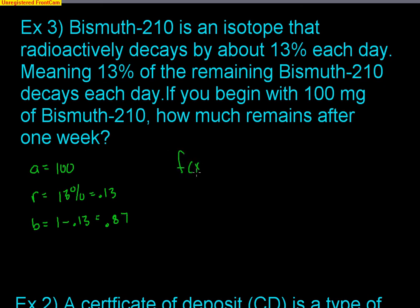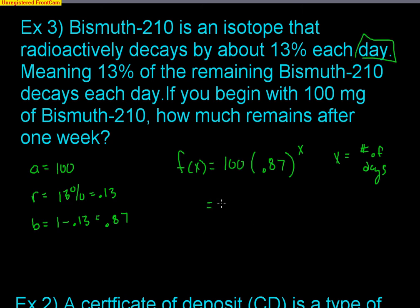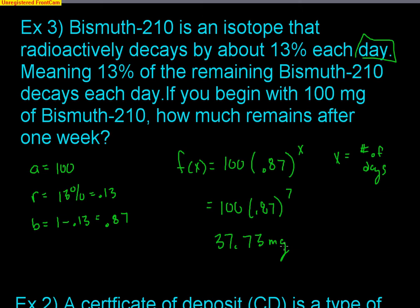My function is 100 times 0.87 raised to X, where X is the number of days. One week is seven days, so: 100 times (0.87) raised to 7 equals 37.73 milligrams. I started with 100 milligrams, losing a little more each day due to exponential decay. After seven days, I'm down to 37.73 milligrams.